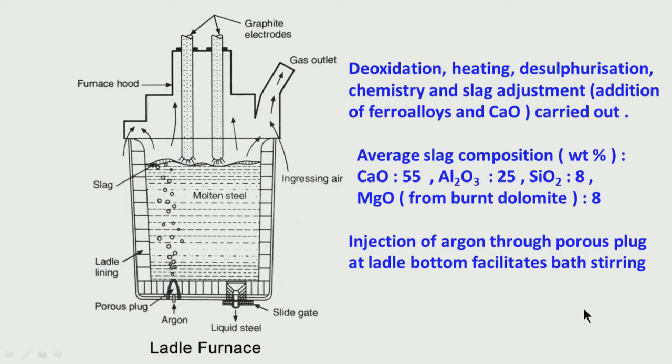Let us come to some typical examples of secondary refining - how it is done in reality. Ladle furnace is a very common secondary refining process. We tap the liquid steel from BOF or EF - from the primary stage we are tapping liquid steel into a ladle. We must ensure that the slag from the primary stage does not carry over, because it has FeO, MnO, and P2O5 - all these oxides are undesirable in the ladle. The primary slag should be cut off; there should be no carryover into the ladle.